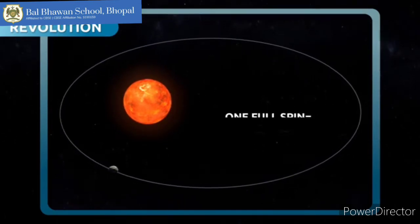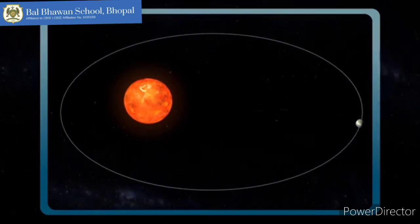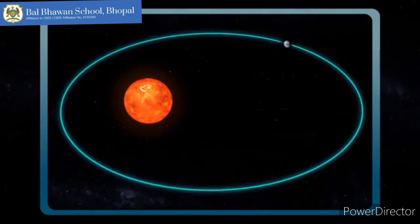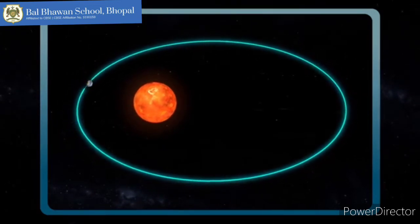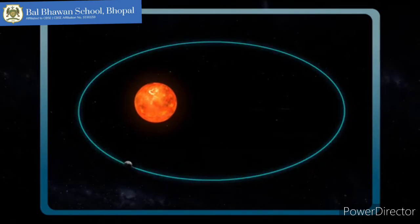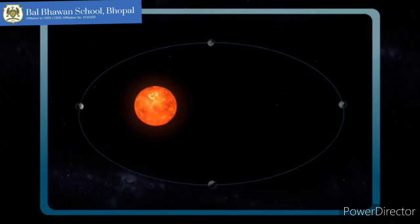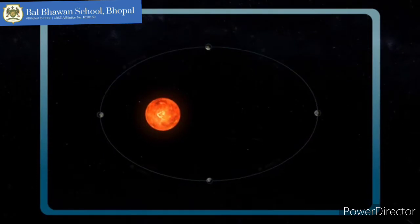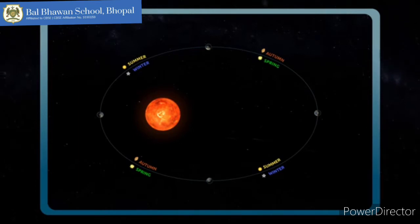The Earth takes one whole year to go around the sun. Before, people used to think that the orbit of the Earth around the sun was circular, but they weren't right. As you can see here, the orbit is elliptical. Thanks to revolution and the inclination of the rotation axis of the Earth, we have four seasons: Spring, Summer, Autumn, and Winter.